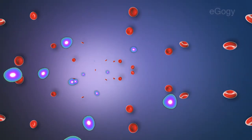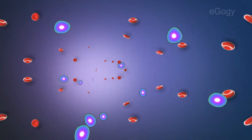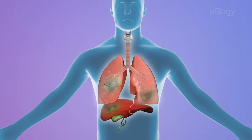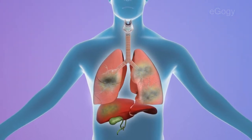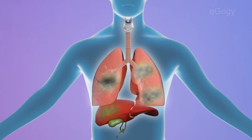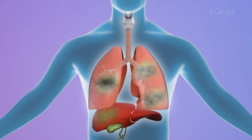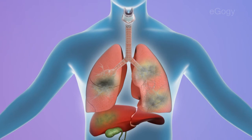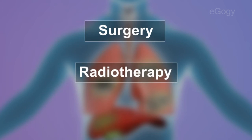Cancer cells are capable of reaching other parts of the body from their place of origin through the blood circulatory system, and they start multiplying throughout the body. Diagnosis during the initial early stages will help to prevent cancer from spreading throughout the body. Mainly three types of treatments are given to treat cancer: surgery, radiotherapy, and chemotherapy.